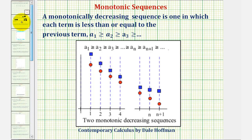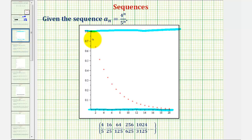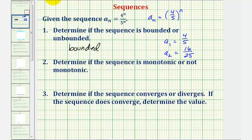Going back to our example, because we're multiplying by another factor of four-fifths each time n increases by one, the values are getting smaller and smaller, and therefore our sequence is monotonically decreasing — and therefore we have a monotonic sequence. Looking at the graph of our sequence, it is very easy to see that each term is decreasing in value.